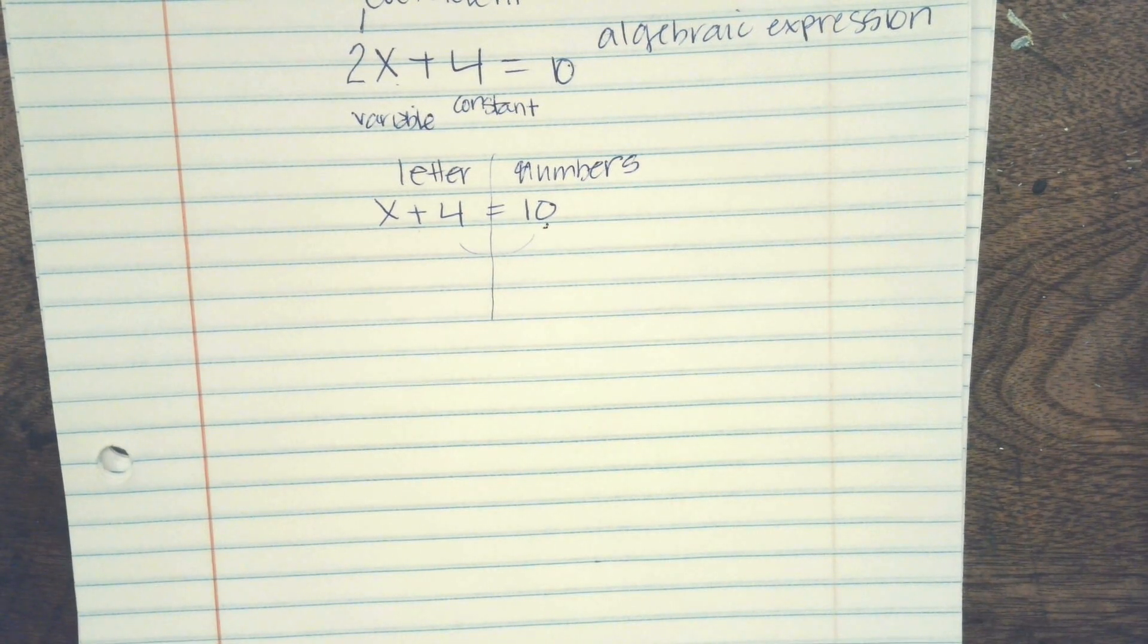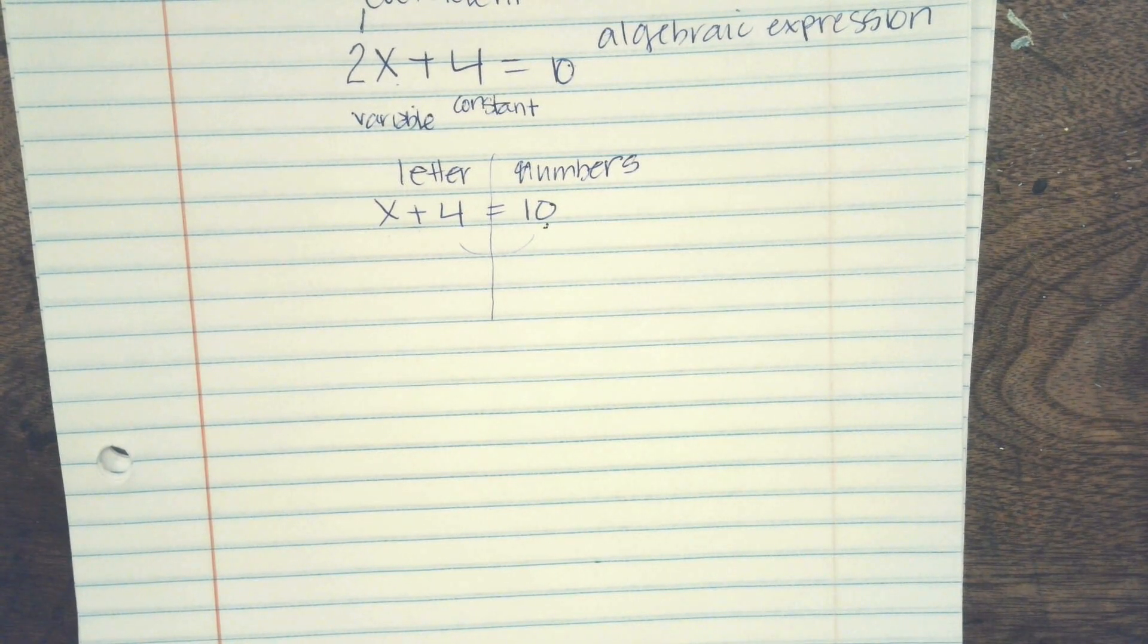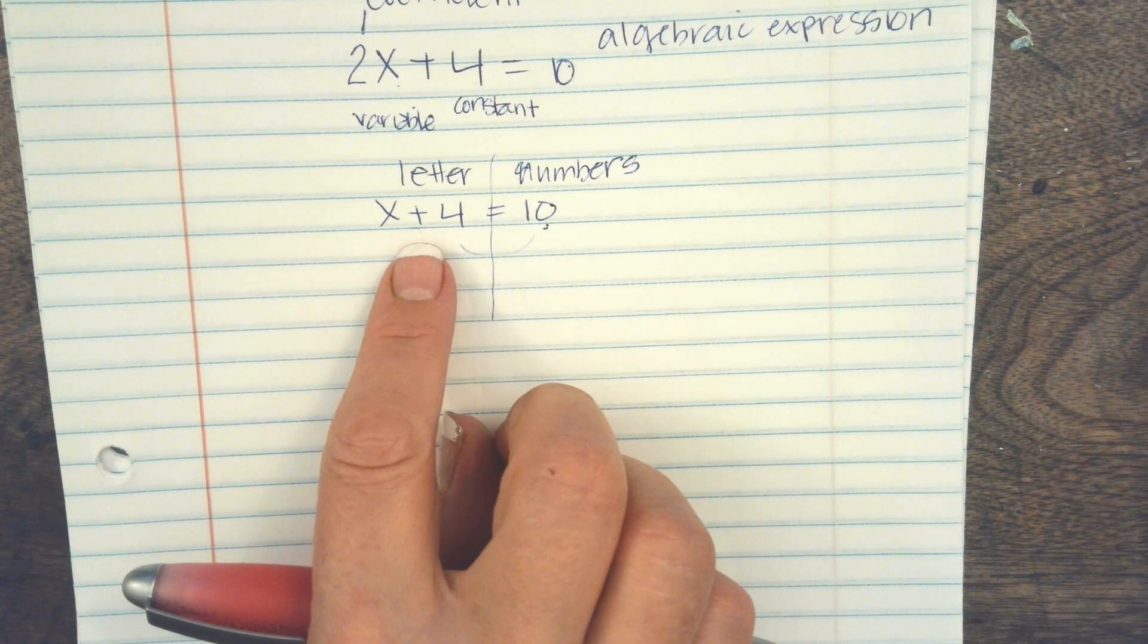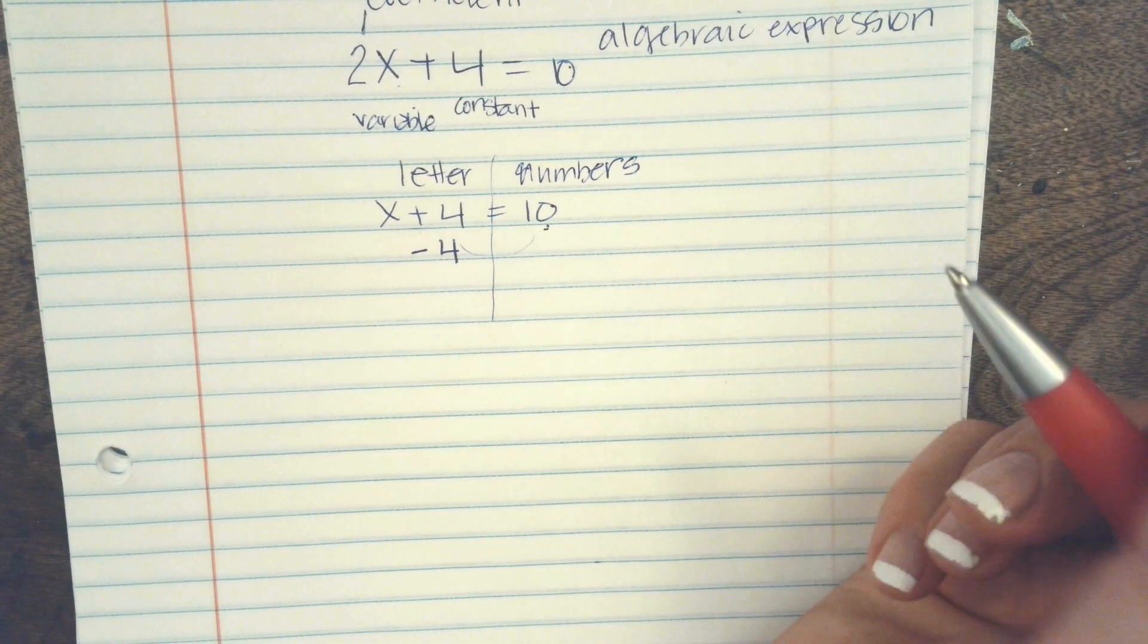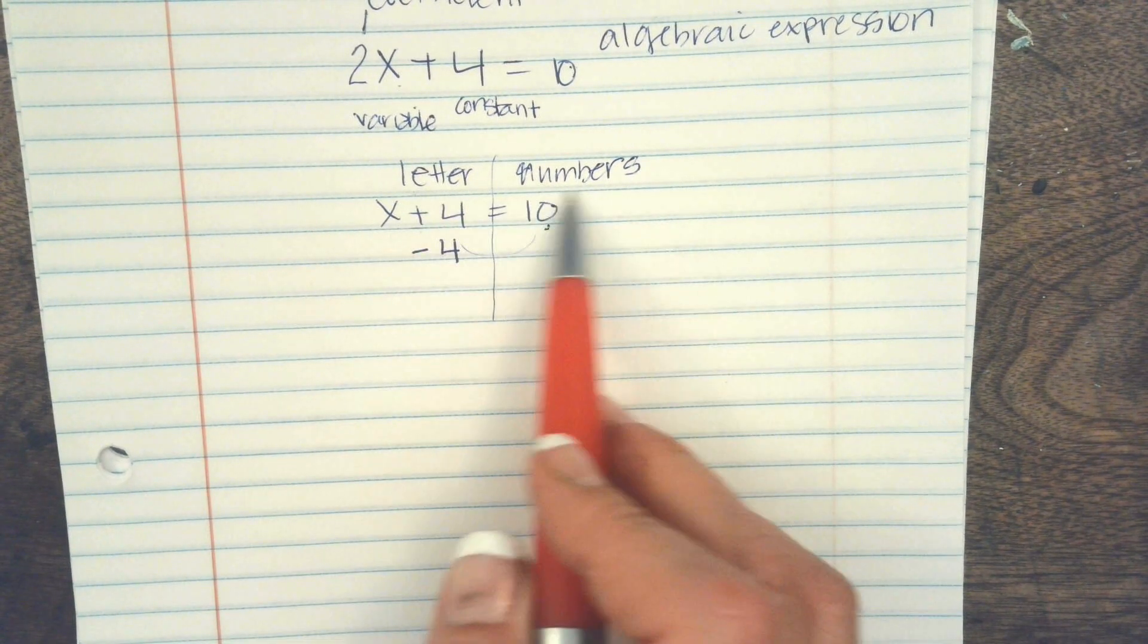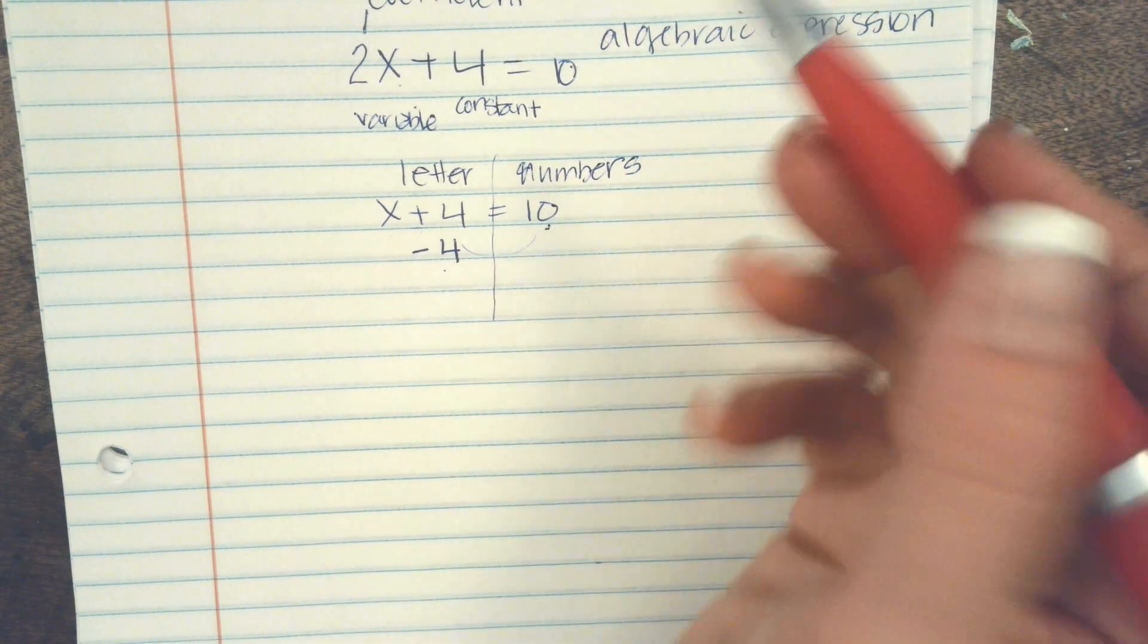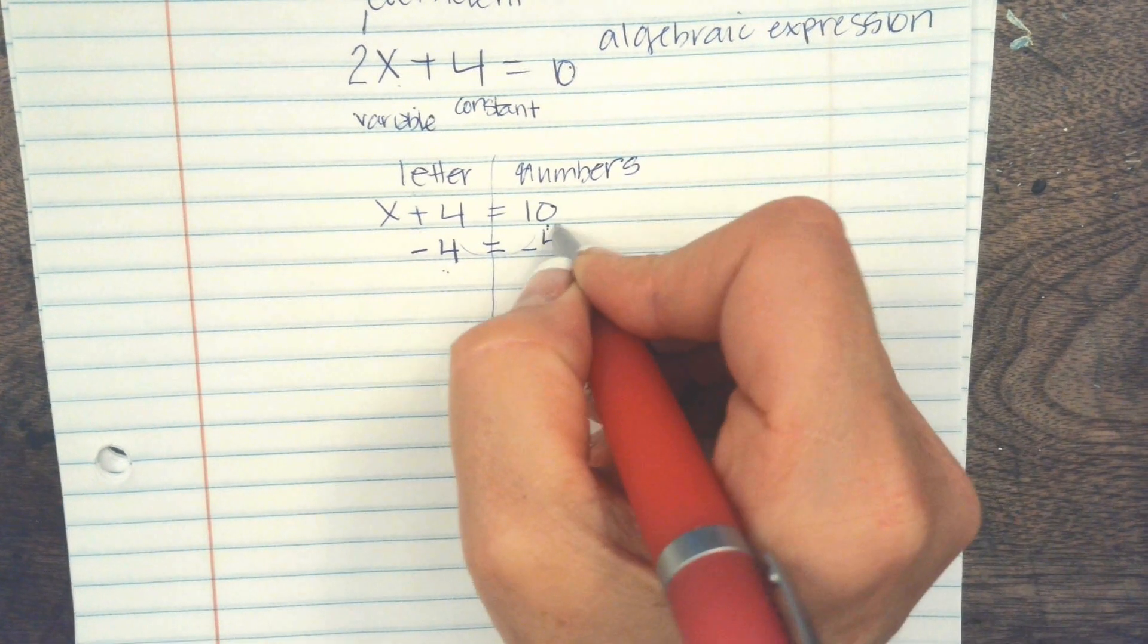So we have to get it over here. But you can't just move it over. The only way to get a number on the opposite side is to do the opposite of what they're doing. So they're adding 4. So what's the opposite of addition? Subtraction. Yeah. So if they're adding 4, we're going to subtract 4. Now, the first rule is that we have letters on one side and numbers on the other side. The next rule is whatever we do on one side of the equal sign, we do on the other side. So if I subtract 4 on this side, I have to subtract 4 on this side.